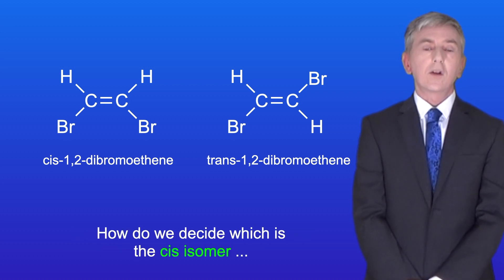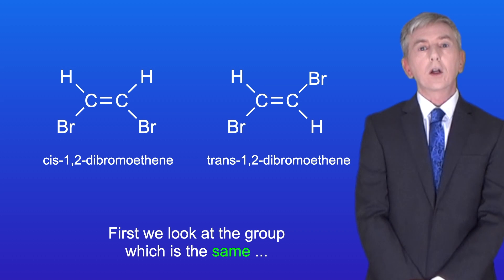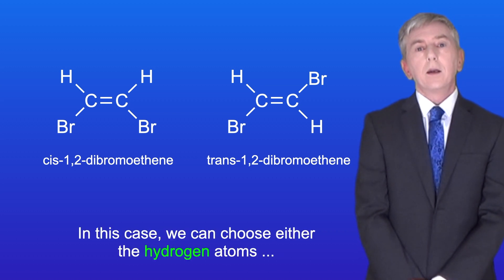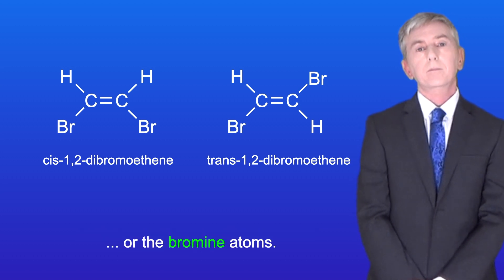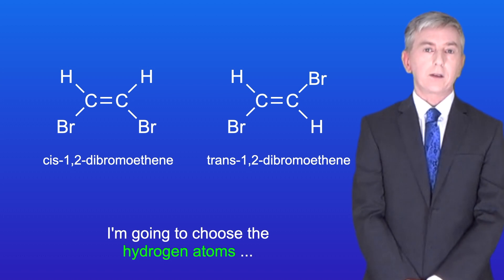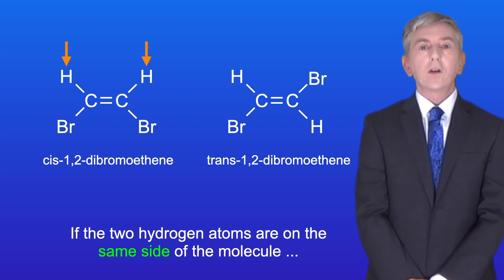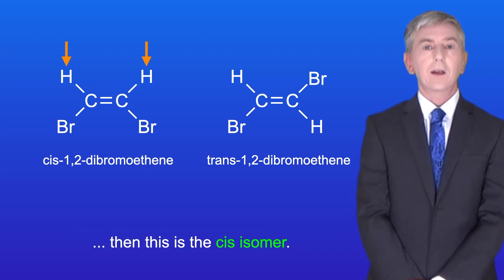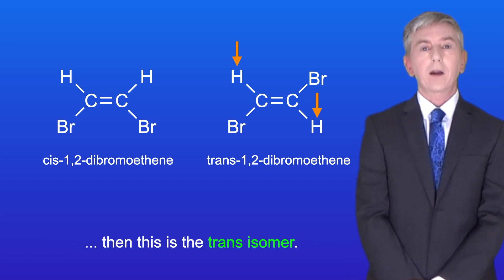So how do we decide which is the cis isomer and which is the trans isomer? We look at the group which is the same on both sides of the double bond — in this case we can choose either the hydrogen atoms or the bromine atoms. I'm going to choose the hydrogen atoms. If the two hydrogen atoms are on the same side of the molecule then this is the cis isomer. However, if the two hydrogen atoms are on opposite sides of the molecule then this is the trans isomer.